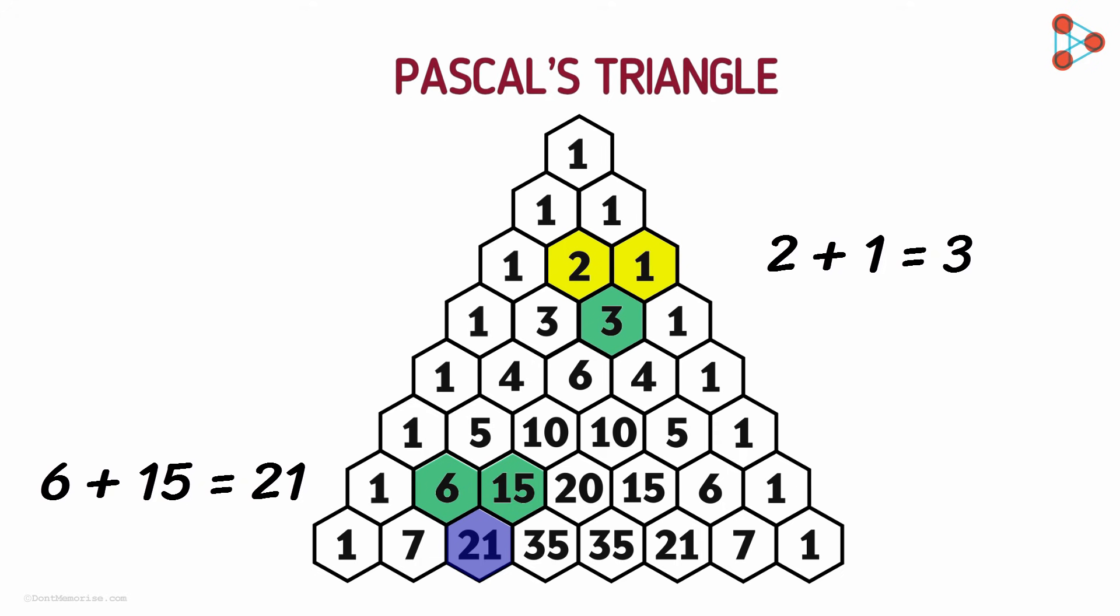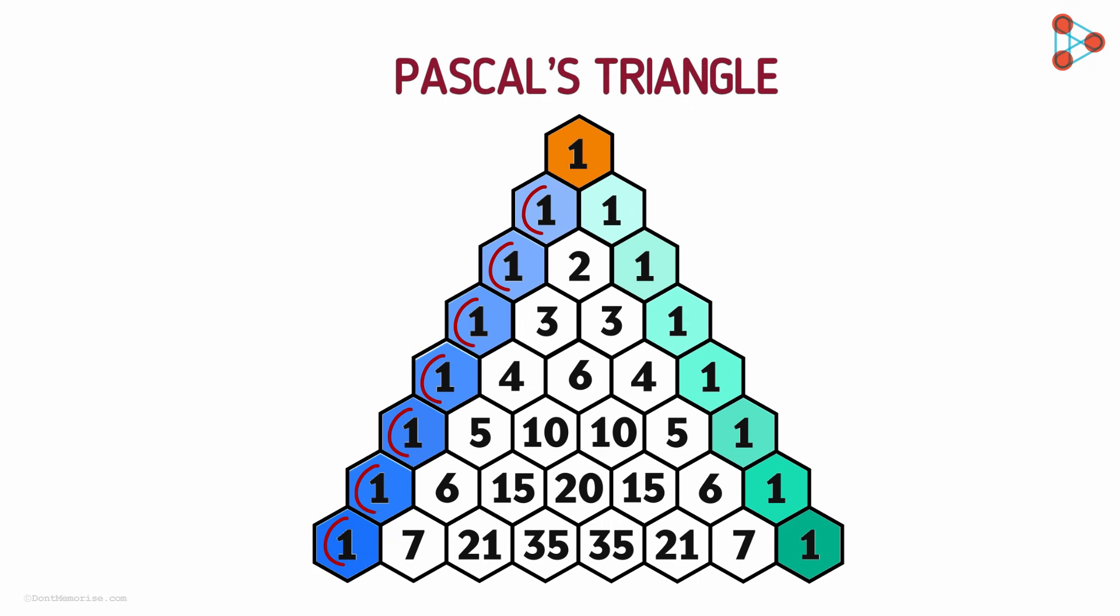What else do we notice? We also see that the starting and the ending numbers are always 1 in each row. Yes, all the numbers on the extreme left and all the numbers on the extreme right are all 1. In the Pascal's Triangle, the rows are numbered starting from 0. This is the 0th row, this is the first one, then the second one and so on.